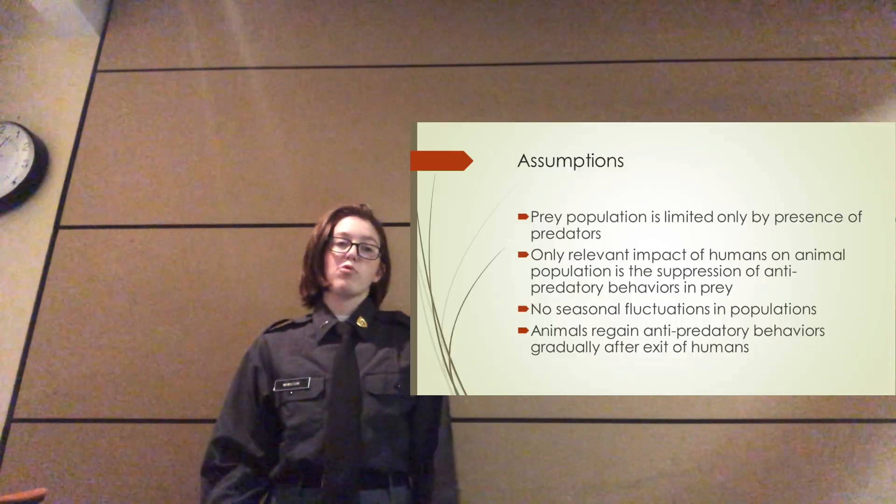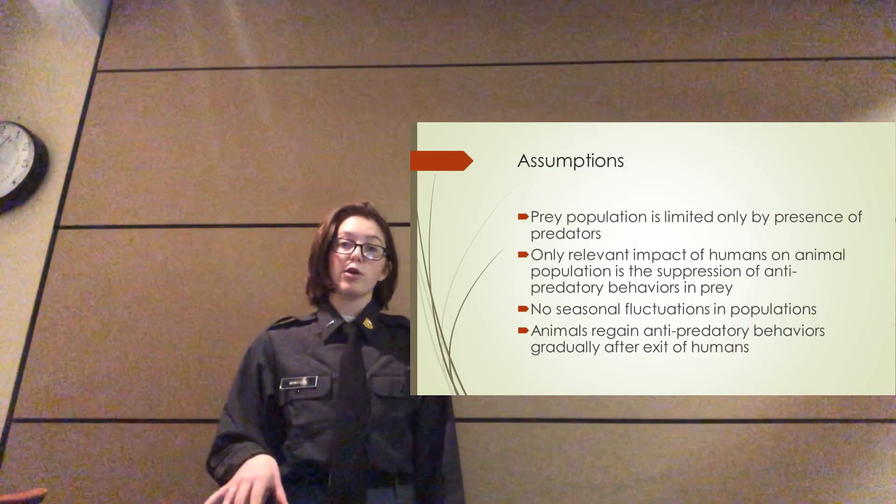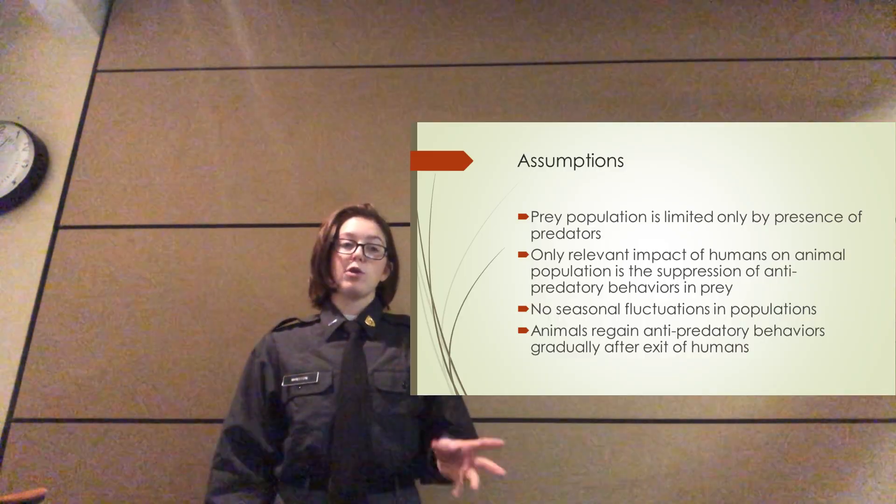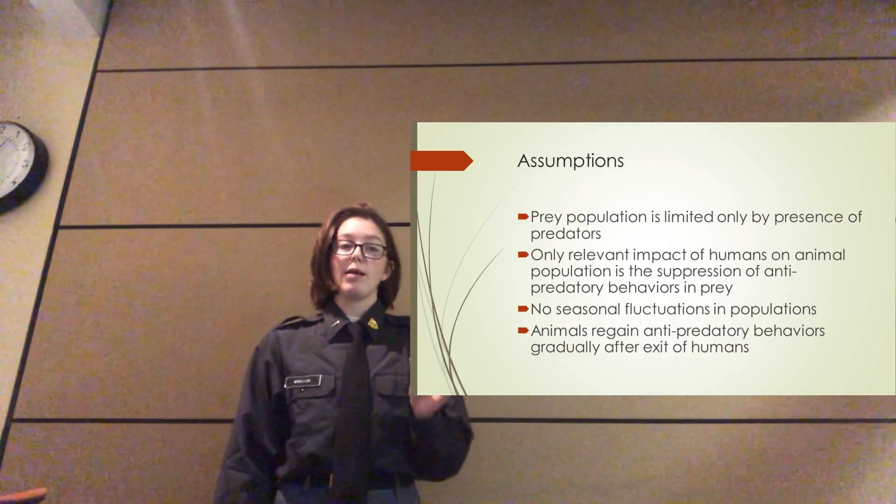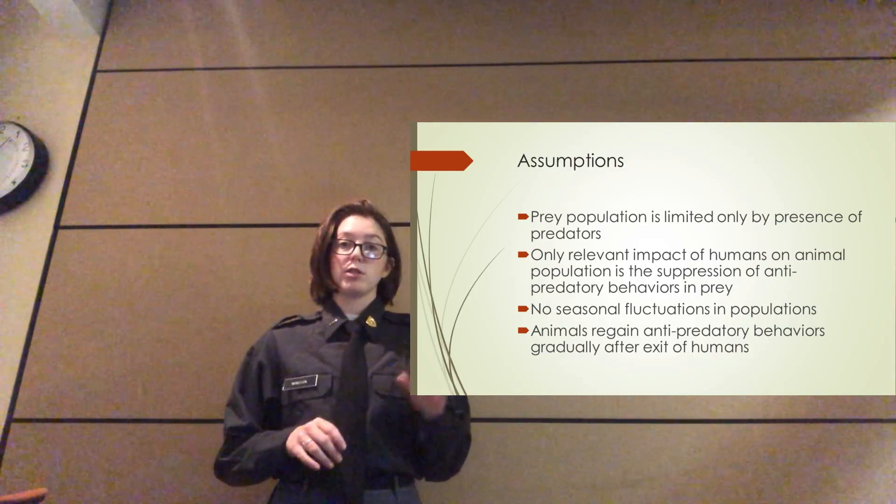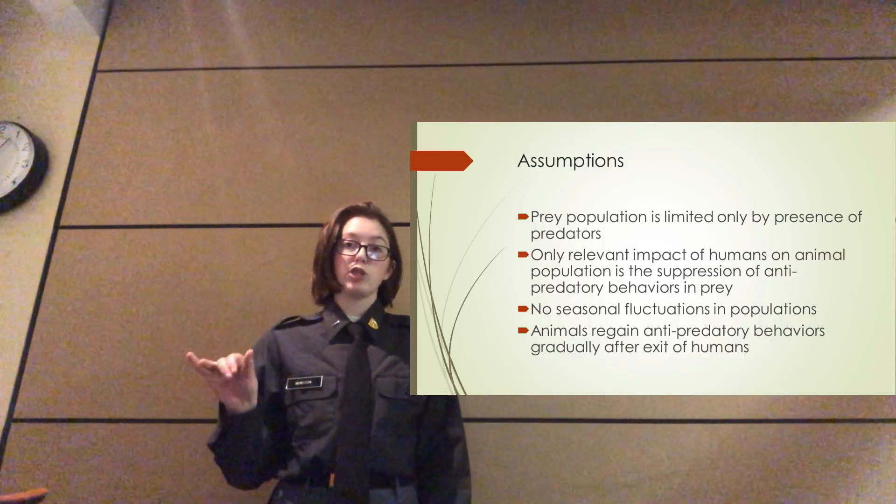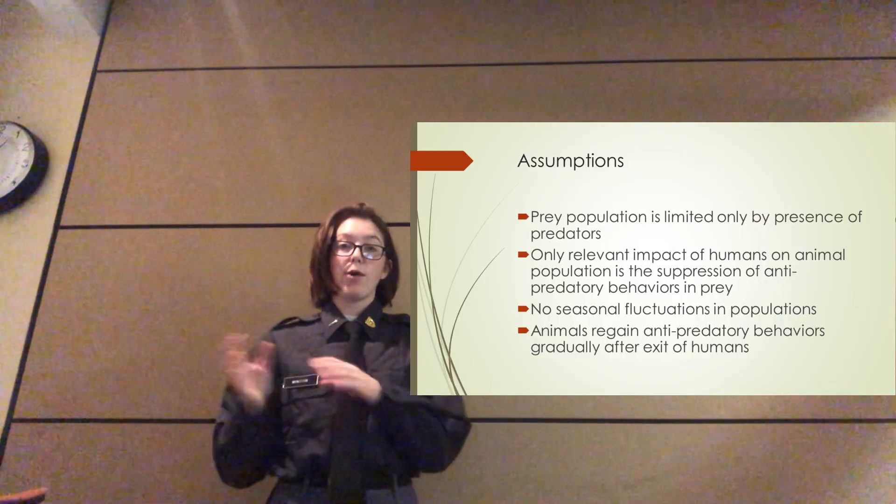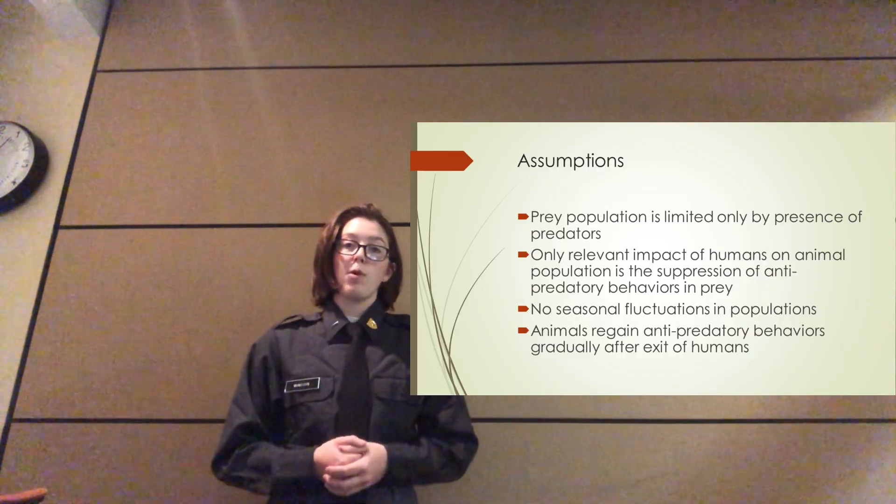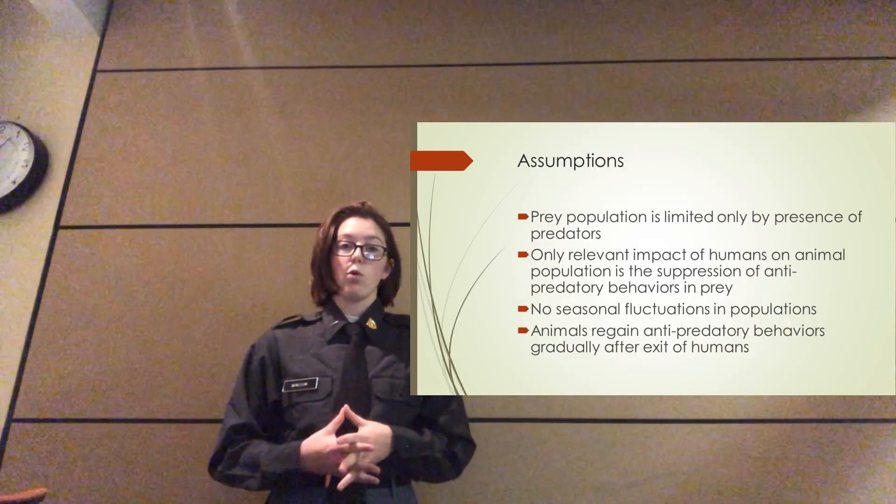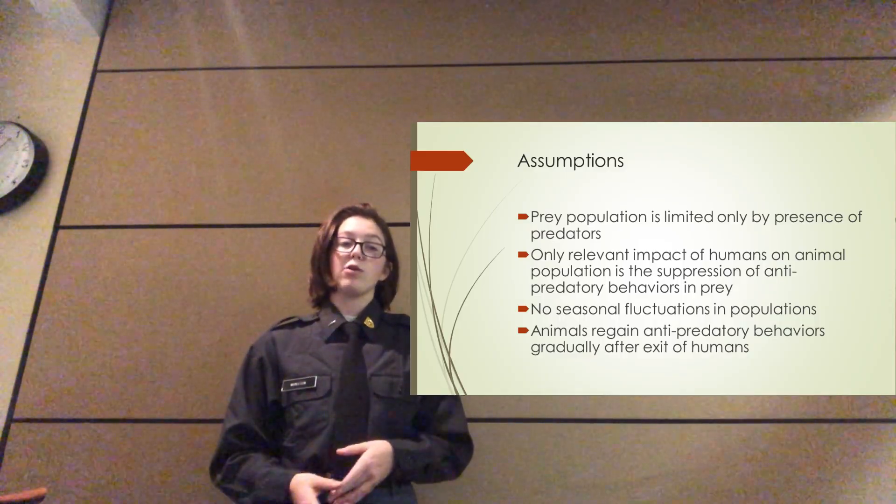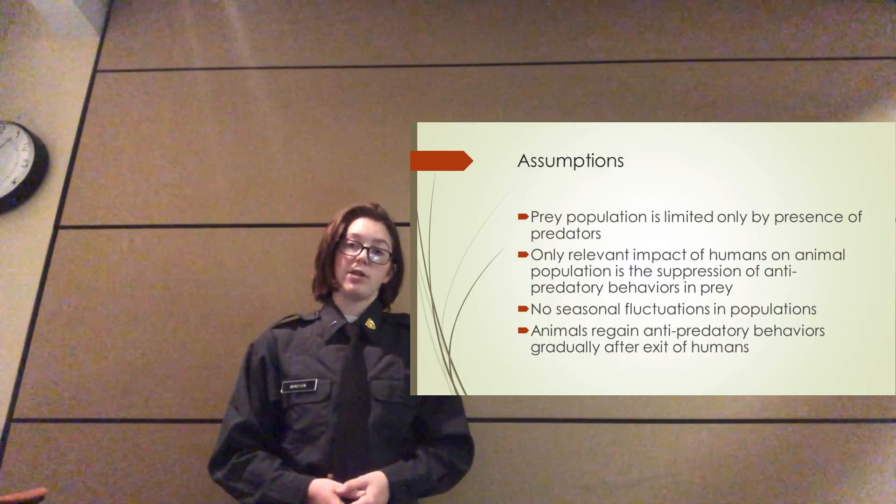In our model, we're assuming that the prey population is limited only by the presence of predators and by nothing else in the system. It is in an isolated environment. Additionally, we are assuming that the only relevant impact of humans on the animal populations is the suppression of the anti-predatory behaviors in the prey. No effects on the predators, simply the reduction in anti-predator response on the prey, and then how that would affect the predators. We assume that there's no seasonal fluctuations in populations, whether that be from mating seasons or otherwise. And finally, we assume that the animals regain their anti-predatory behaviors gradually after the exit of humans from the system.